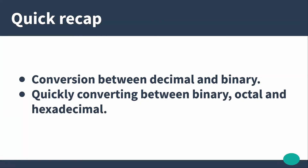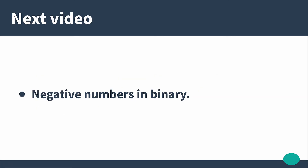To recap: in this video we worked through examples of converting a number from its conventional decimal representation into binary. We also covered the principle of quickly shifting between binary, octal, and hexadecimal representations. In the next video we'll cover representations of negative numbers in binary. Thank you for watching.